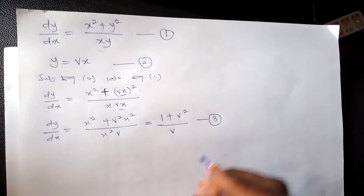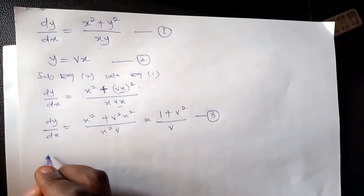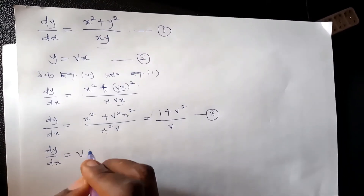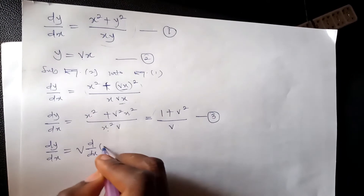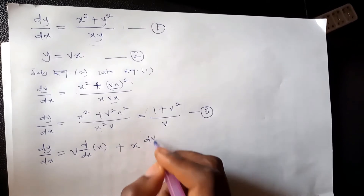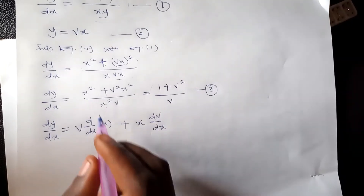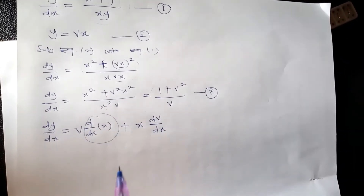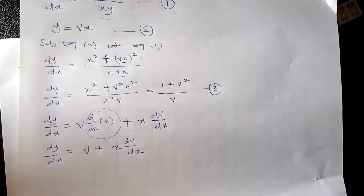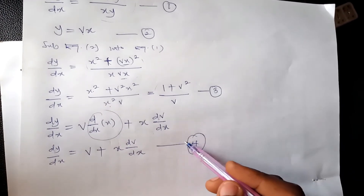Let's call this equation three. Going back to equation two — y equals vx — I need to find dy/dx from equation two. Using the product rule: dy/dx equals v times the derivative of x, plus x times dv/dx. Differentiating x gives one, so we have this expression. Let's call this equation four, and equate equation three to equation four.